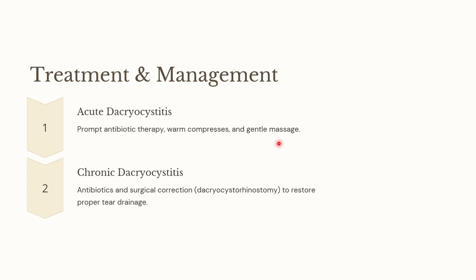Once the infection has resolved, evaluate the patency of the nasolacrimal duct system with probing and irrigation. If an obstruction is present, surgical correction is required. In cases of chronic Dacryocystitis, start to manage with antibiotics, but surgical correction is required — i.e., Dacryocystorhinostomy with silicone intubation. In chronic cases, surgical correction is helpful to restore proper tear drainage.